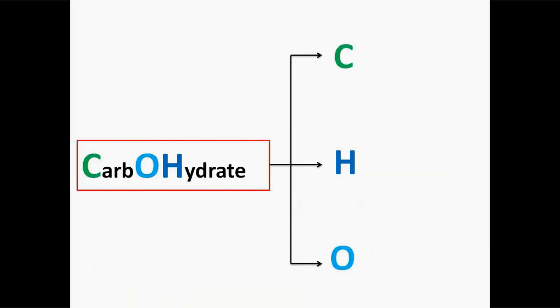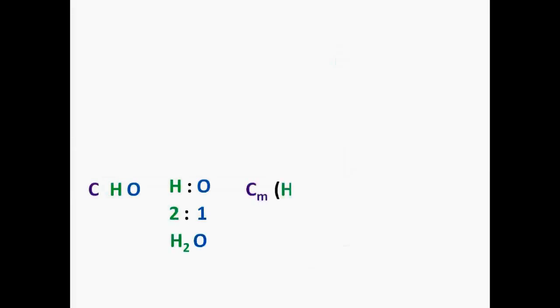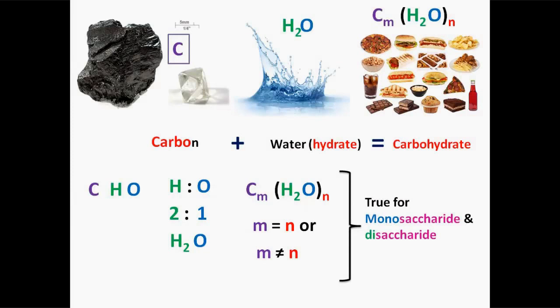A carbohydrate is a sweet-tasting biological molecule consisting of carbon, hydrogen and oxygen atoms, usually with a hydrogen-oxygen atom ratio of 2 to 1, just like water. In other words, with the empirical formula Cm(H2O)n, where m could be different from n.